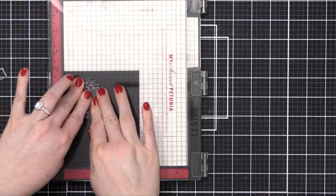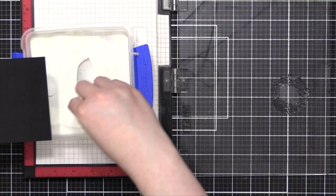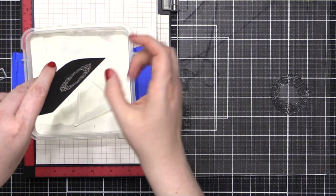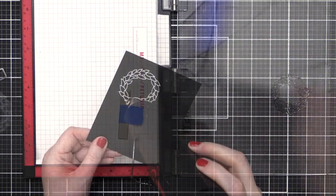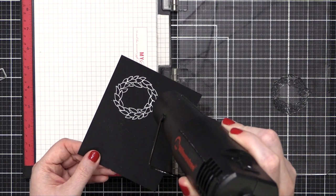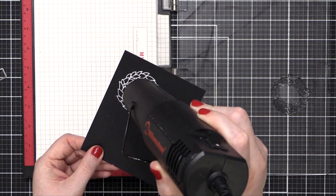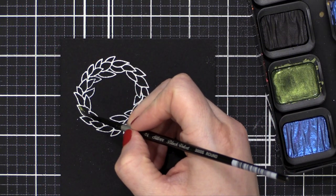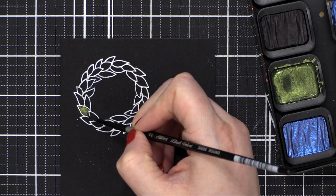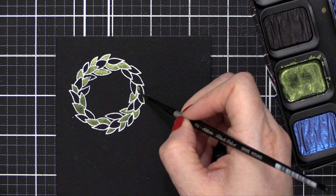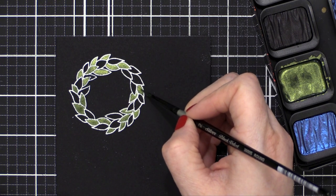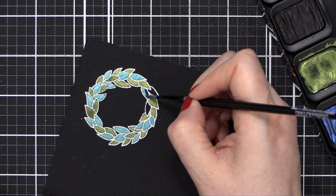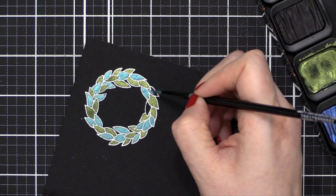I stamped the wreath and I followed the same steps that I did earlier by stamping it in Versamark ink, applying some white embossing powder, and then heat setting with my heat tool. I then painted the wreath with two different colors. I'm using the green that I used on the stockings and I just went all the way around and kind of left some gaps, and then I came in with that teal blue shade and filled in all of the other leaves.